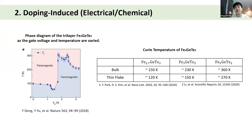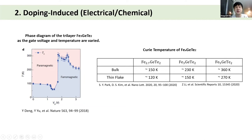The second approach is to increase the critical temperature through doping. There are two kinds of doping methods: electrical and chemical. In this class we already learned that the number of electrons in a transition metal can change its magnetic properties — this is a similar story. If you control the doping level in the transition metal of a 2D van der Waals material, you can tune its magnetic properties including the critical temperature. Applying a gate voltage allows you to tune the doping level.